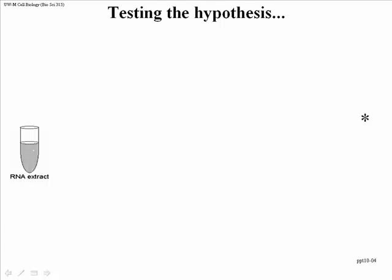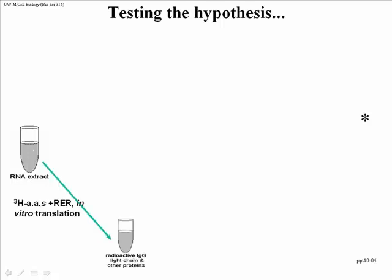We can test this hypothesis in the following manner. Using the RNA extract from cells that produce only IgG light chain, we do cell-free translation as before — but this time we add rough endoplasmic reticulum extracted from the cells using differential centrifugation. The RER fraction is added to the cell-free translation system. The idea is that if the RER is present during translation, the protein produced will actually be produced inside the RER. If there is an enzyme associated with RER that cuts off the traffic signal, you should see a smaller peptide made inside the RER.